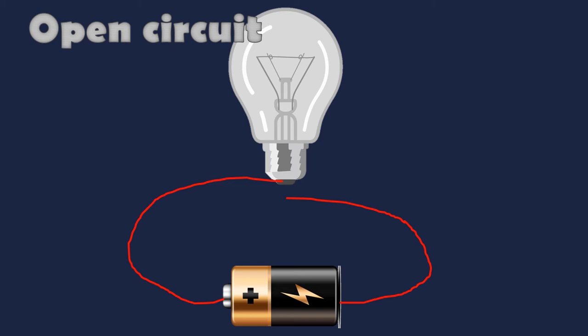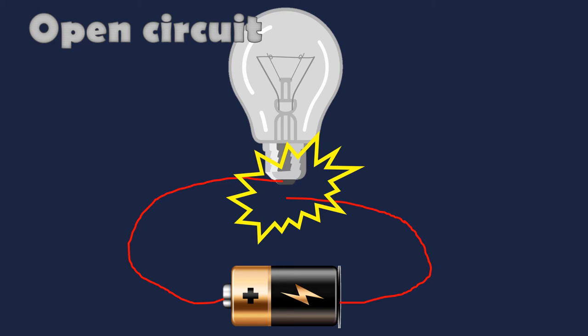On the other hand, we have here another open circuit with bulb, battery, and wires. But still, the bulb doesn't light up. It is because the wire is not connected properly to the bulb. That is why the bulb is not lighting up.